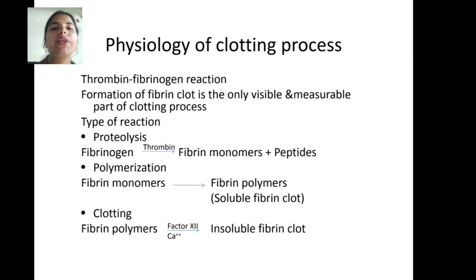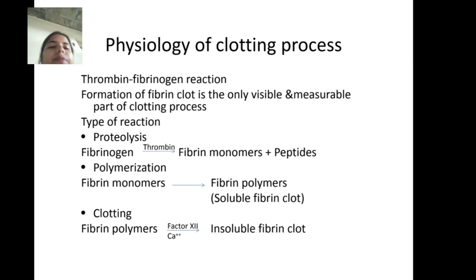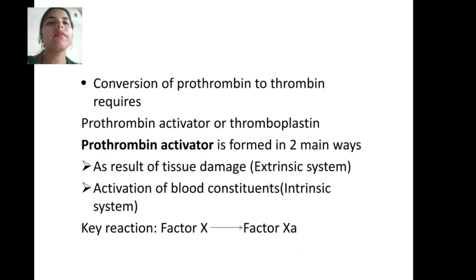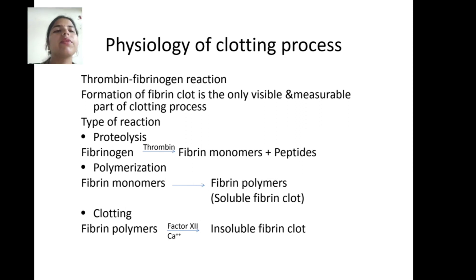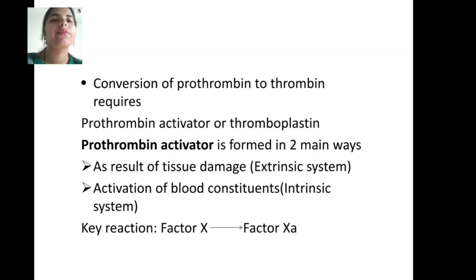In polymerization, fibrin monomers are converted into fibrin polymers, forming a soluble fibrin clot. The clotting factor involved is factor 13, along with calcium, which produces an insoluble fibrin clot.